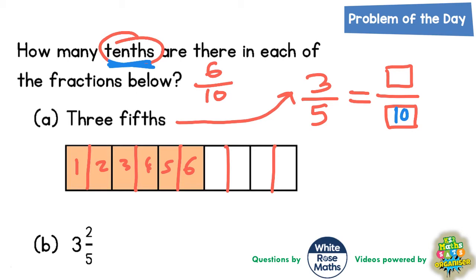Then you say to yourself: how do you get from 5 to 10? What's the connection? You're multiplying by 2 — 5 times 2 is 10. Whatever you do to the denominator, you also do to the numerator. So 3 times 2 would be 6. That's another way of getting six tenths.